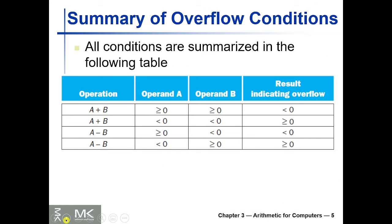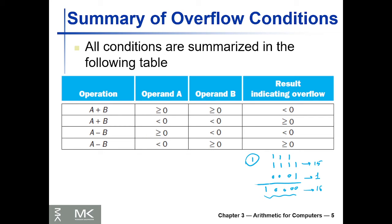We might also have an overflow condition. For example, if we add 1111 plus 1 in a 4-bit representation: 1+1=0 carry 1, 0+carry=0 carry 1, 0+carry=0 carry 1, 0+carry=0 carry 1 — the result needs 5 bits. This is because 1111 is 15, and 15+1=16, which requires 5 bits to represent. That is called overflow.